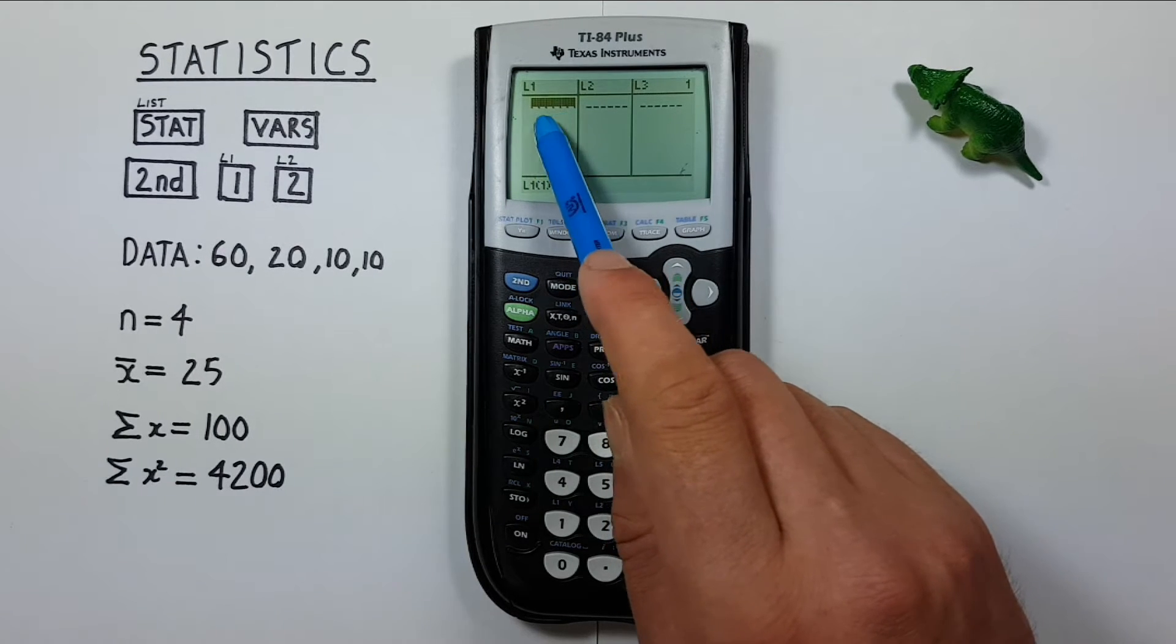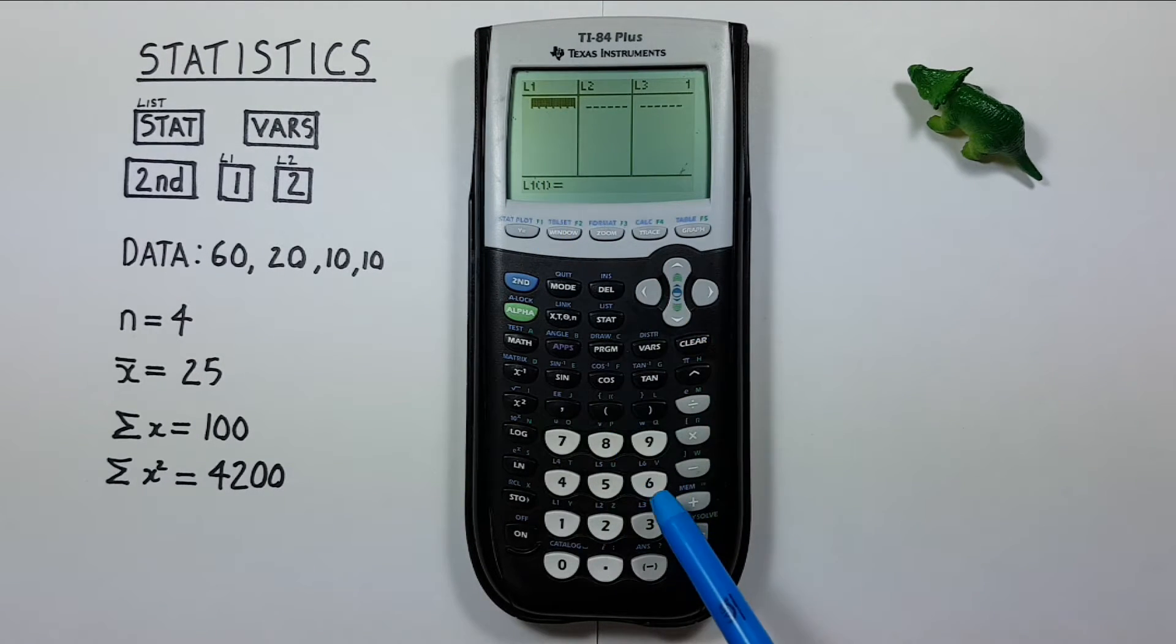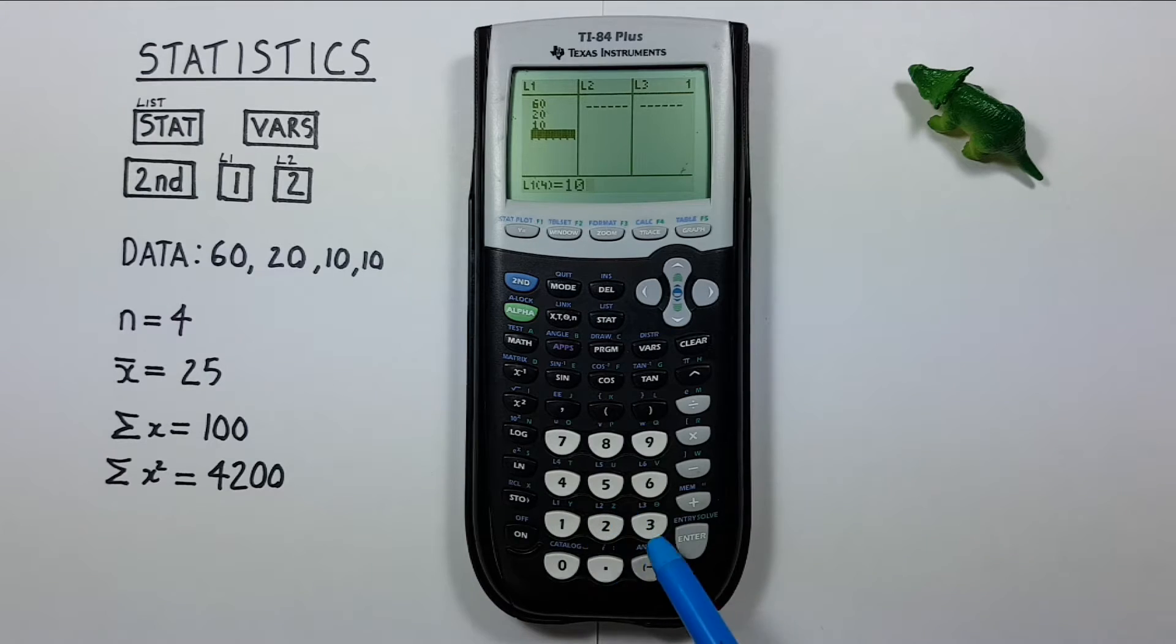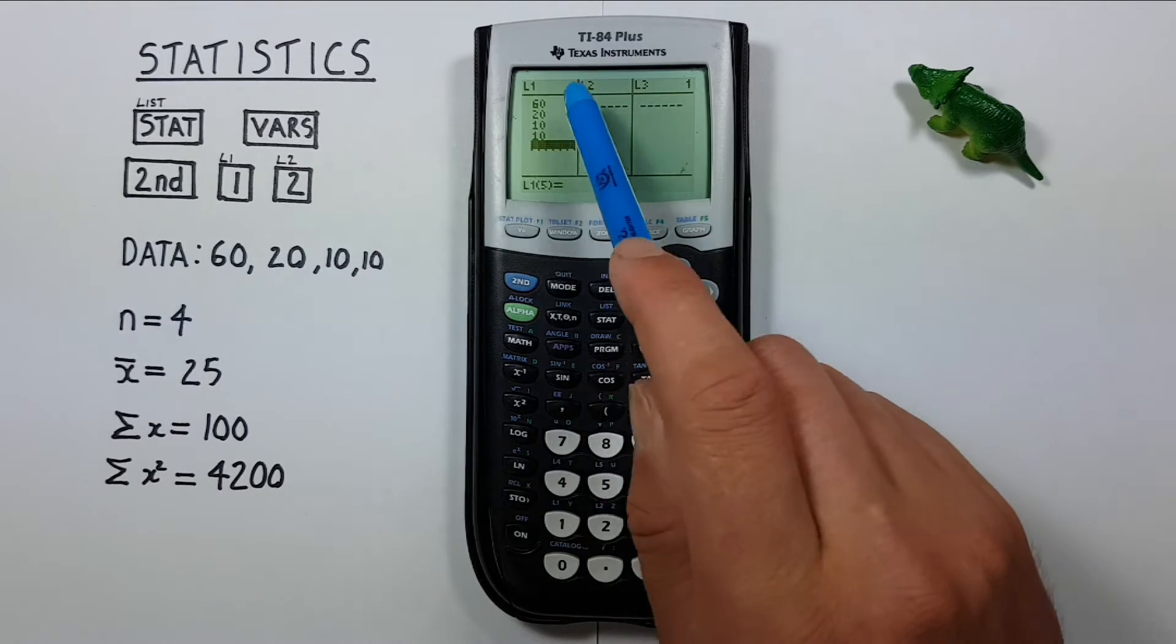Now I can go ahead and enter our data into this list. So 60, 20, 10, and 10. There we go. That's our entire data set.